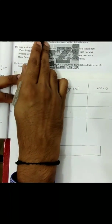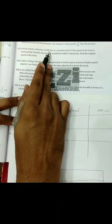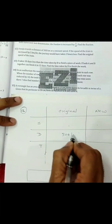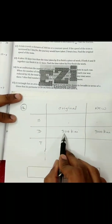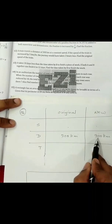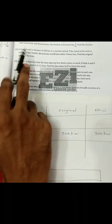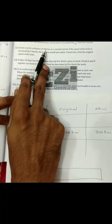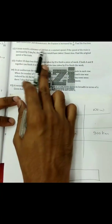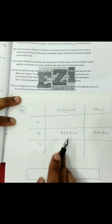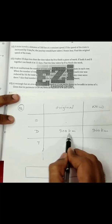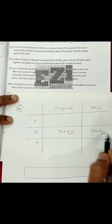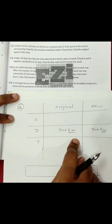A train travels a distance of 300 km — so this is one data, the distance is 300 km. It would be 300 km in either case. Read the question carefully: the distance in both cases — original and new — remains the same, 300 km. So write the distance in both columns: 300 km and 300 km. Make sure you are writing the units in the given data.